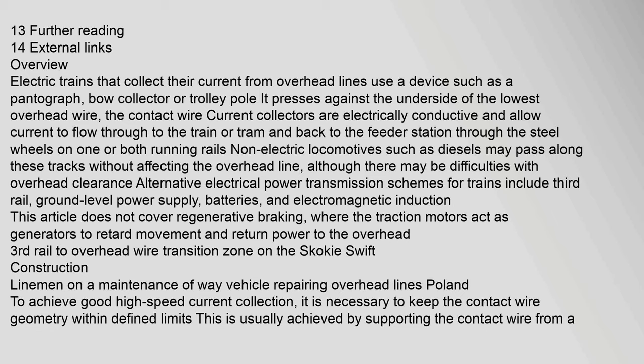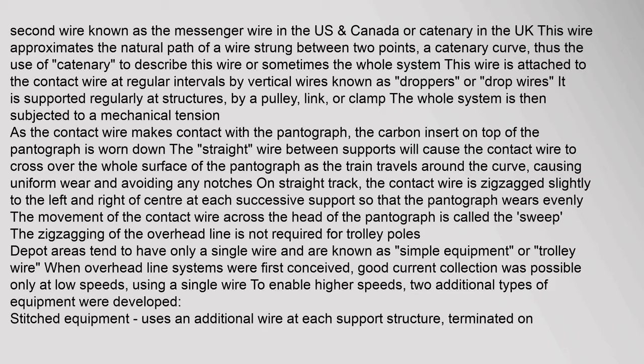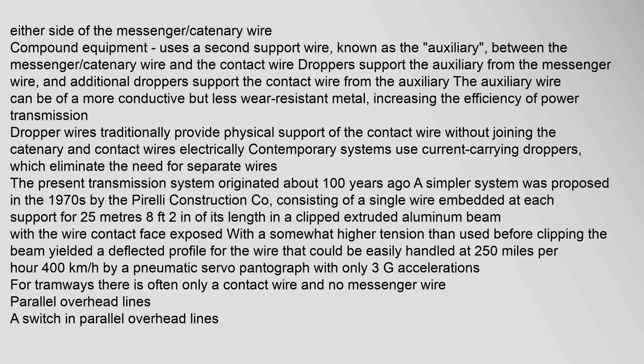To achieve good high-speed current collection, it is necessary to keep the contact wire geometry within defined limits. This is usually achieved by supporting the contact wire from a second wire known as the messenger wire in the US. Either side of the messenger catenary wire, compound equipment uses a second support wire known as the auxiliary, between the messenger wire and the contact wire. Droppers support the auxiliary from the messenger wire, and additional droppers support the contact wire from the auxiliary.